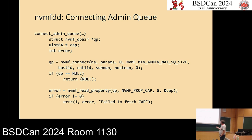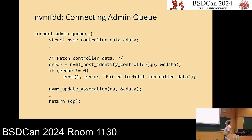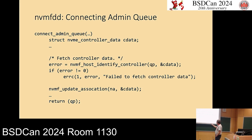Further down, I need to call update_association, which requires the controller data from identify. I call the wrapper host_identify_controller, which constructs the identify command, sends it, and returns the controller data. Then I call update_association on my association object so it can read what it needs — after that, I'm ready to create IO queue pairs.